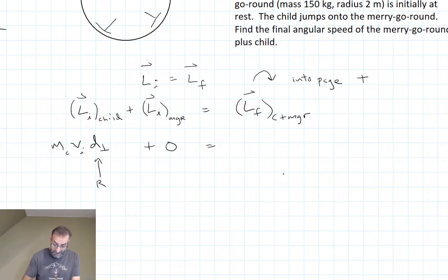And at the end, they're stuck together. So we're going to use I omega. And again, it's positive because omega is into the page.